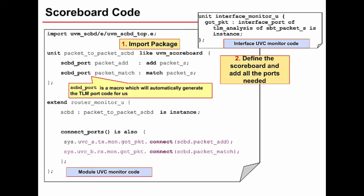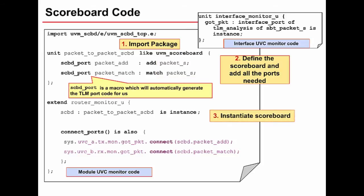The scoreboard macro is the text scbd_port followed by some extra code we type in, that will get replaced ultimately with a whole bunch of generated code. As a user, it's very simple - we just need to say scbd_port and then give a name for our port. This macro creates an add port to our scoreboard database. We also define a match port - notice the type is either 'add' or 'match' after the colon. The kind of information we're adding or matching is the same in our case because the data type going into the design is the same as coming out.